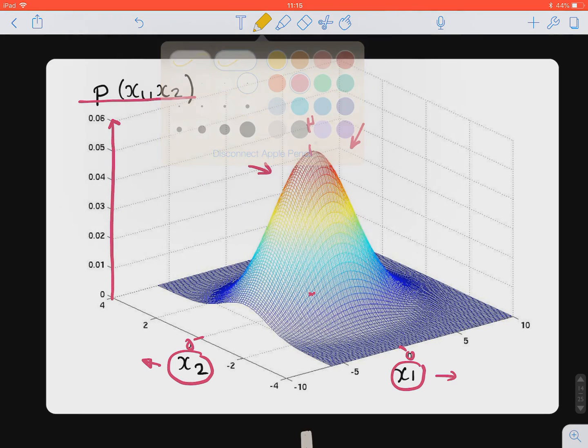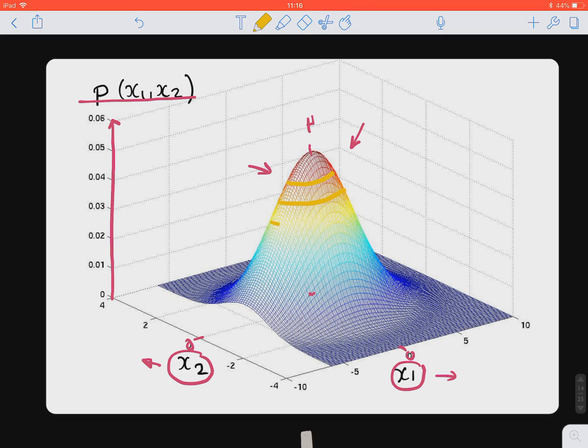We thought there is a potential, we can try to cut this nice Gaussian curve at different levels. And those levels are constant in p(x₁, x₂).